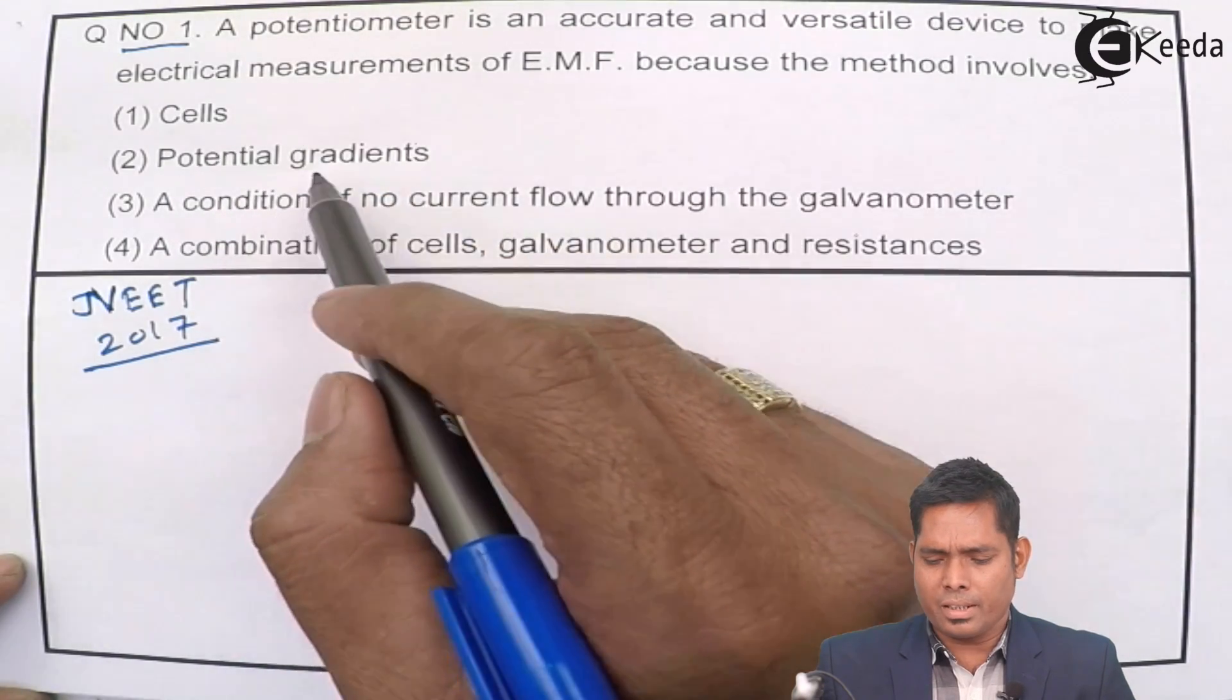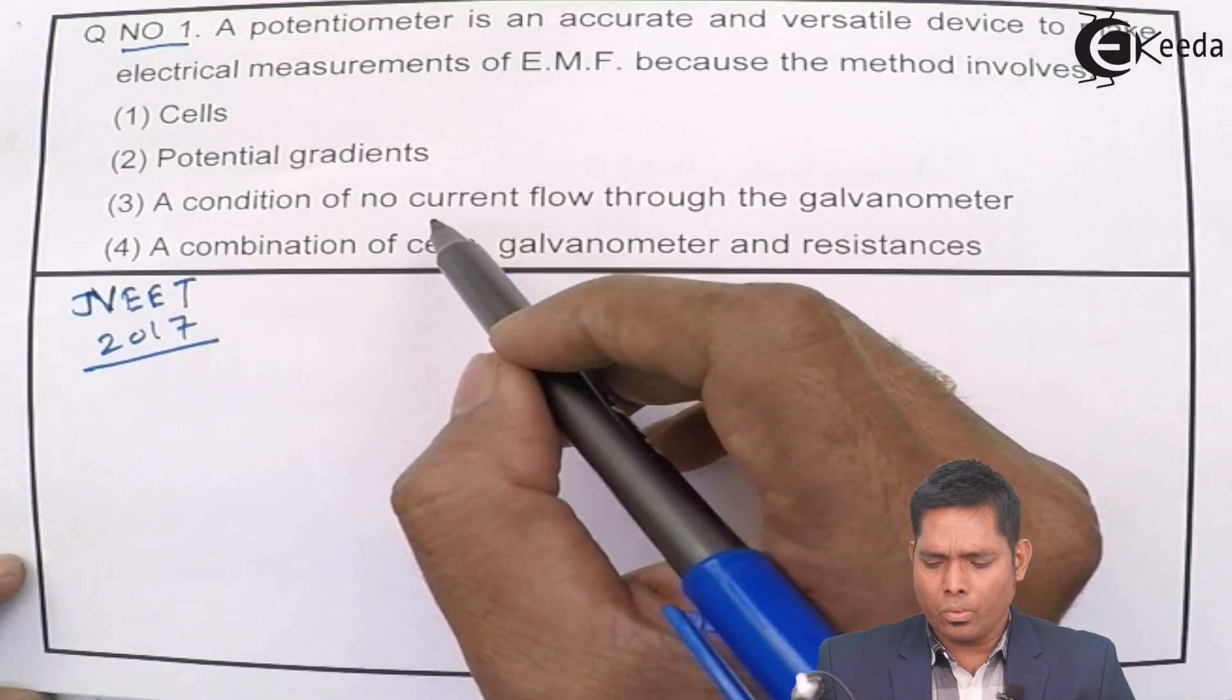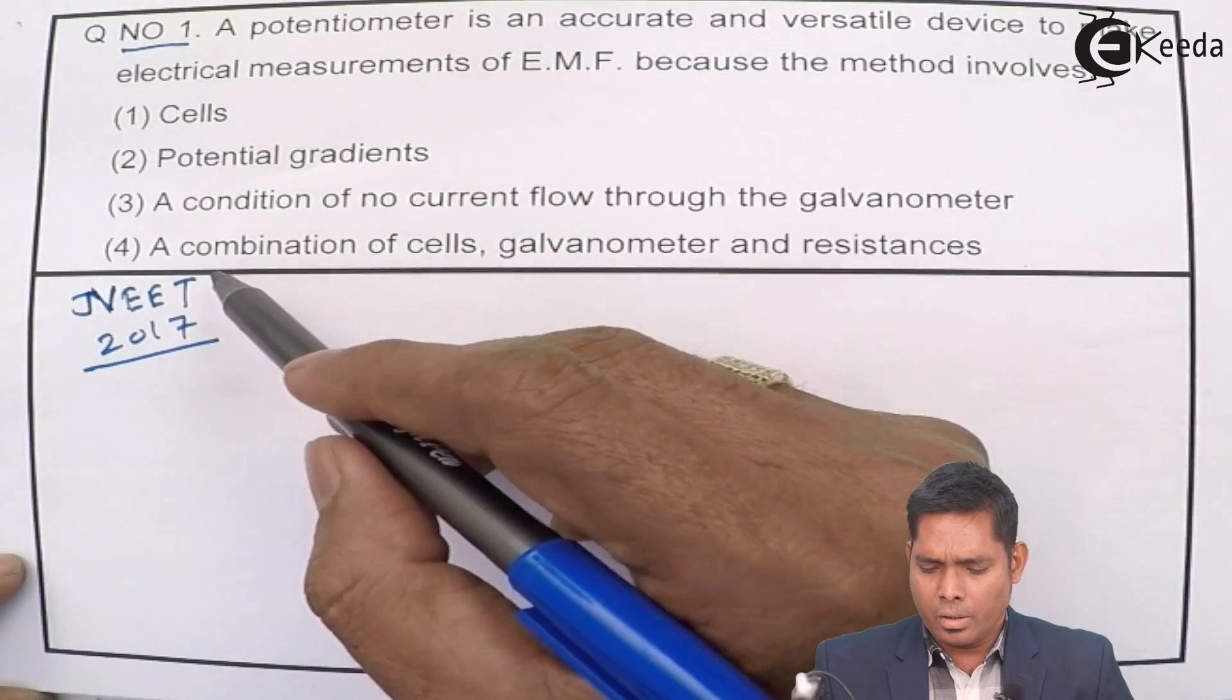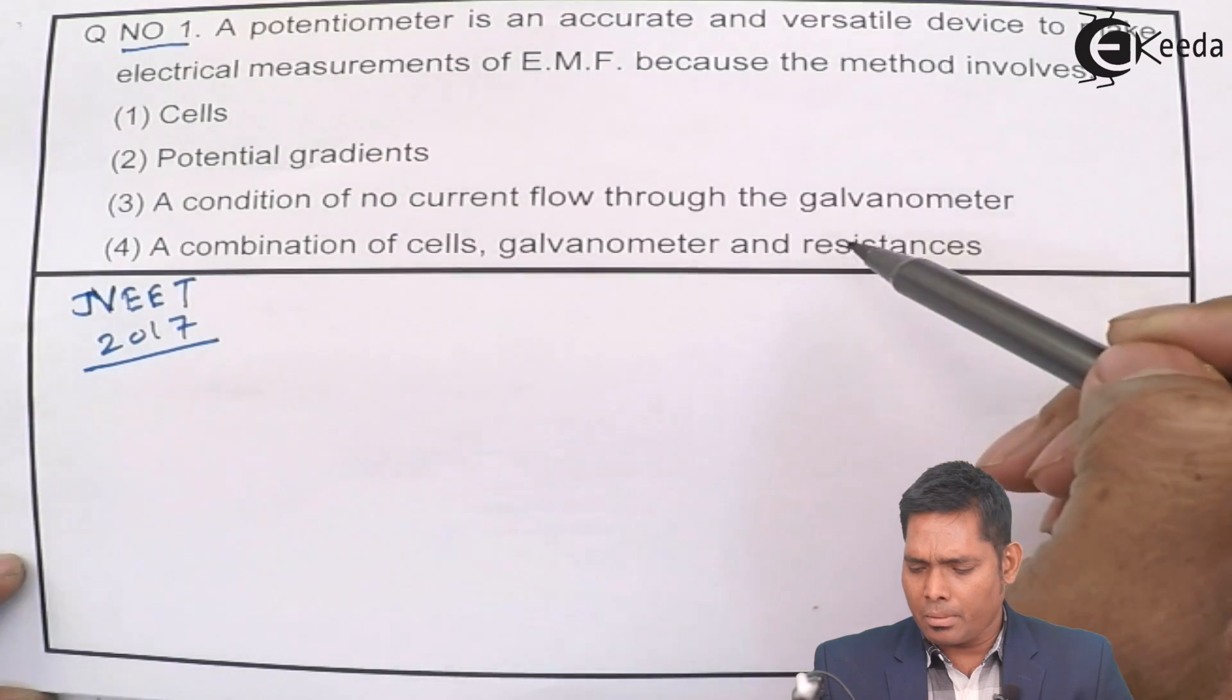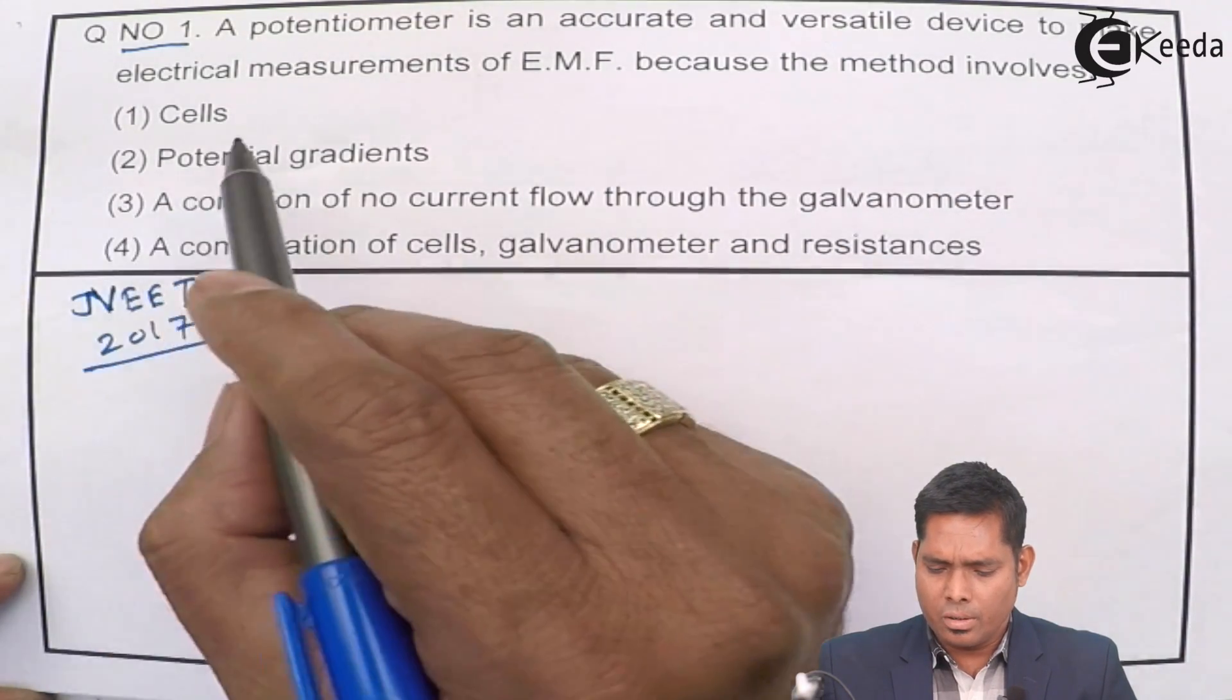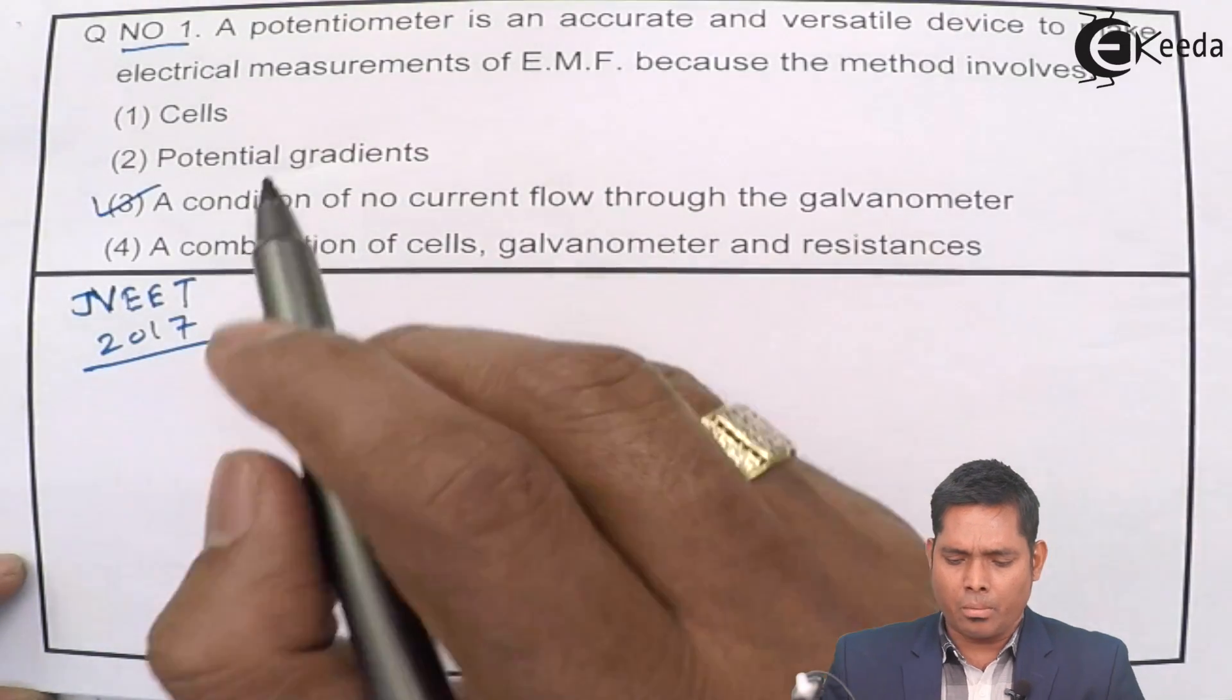potential gradients, condition of no current flowing through the galvanometer, a combination of cells and galvanometer resistances. The correct answer to this question lies in number 3.